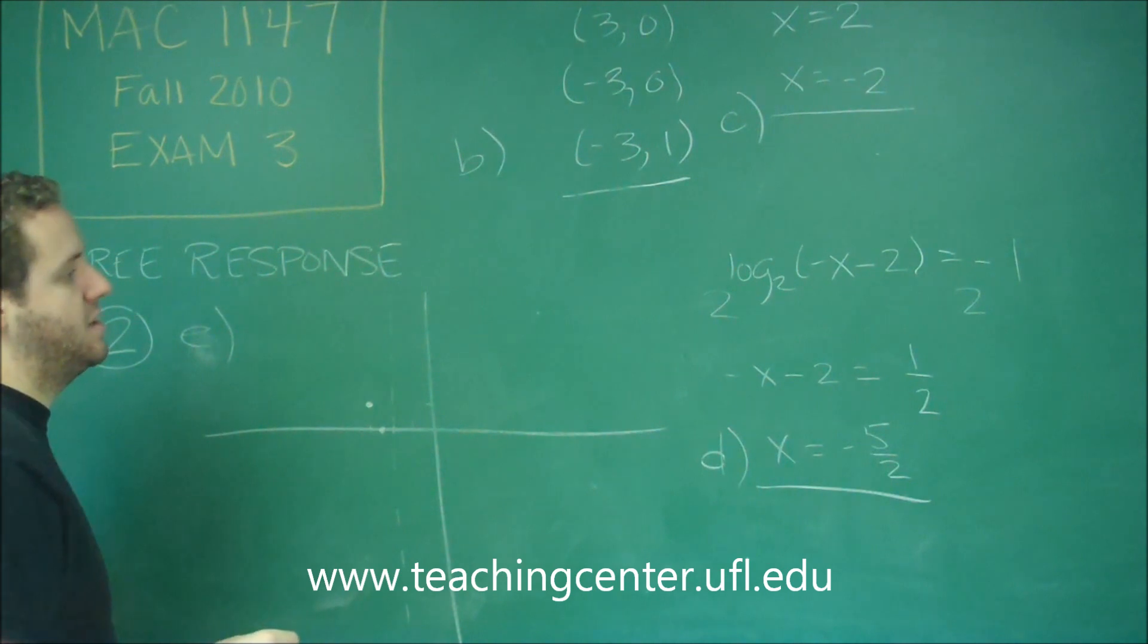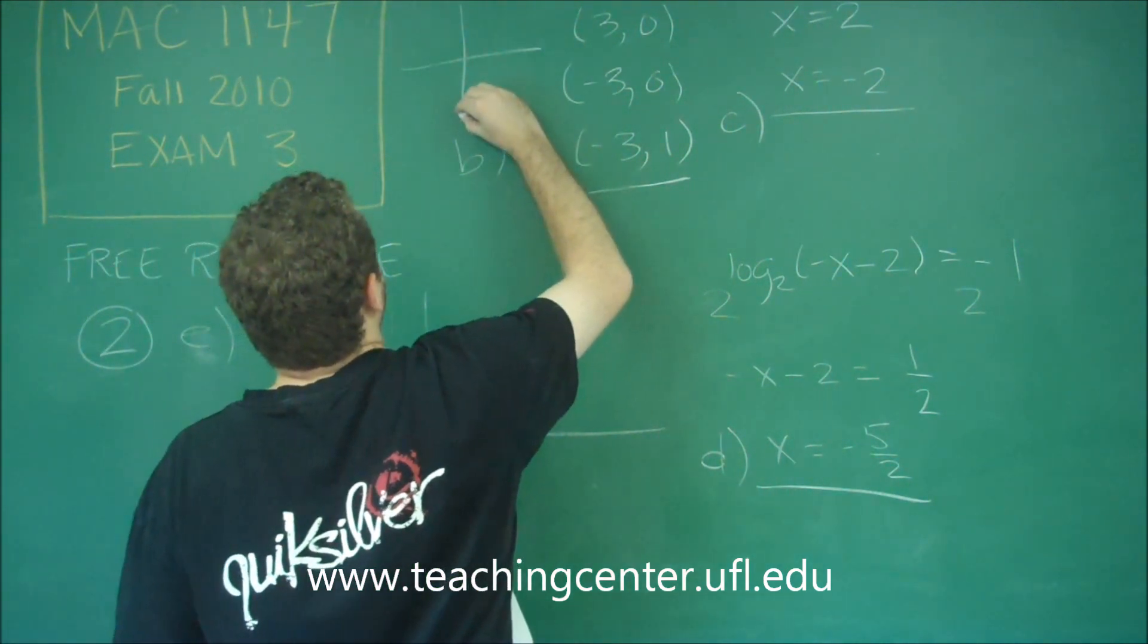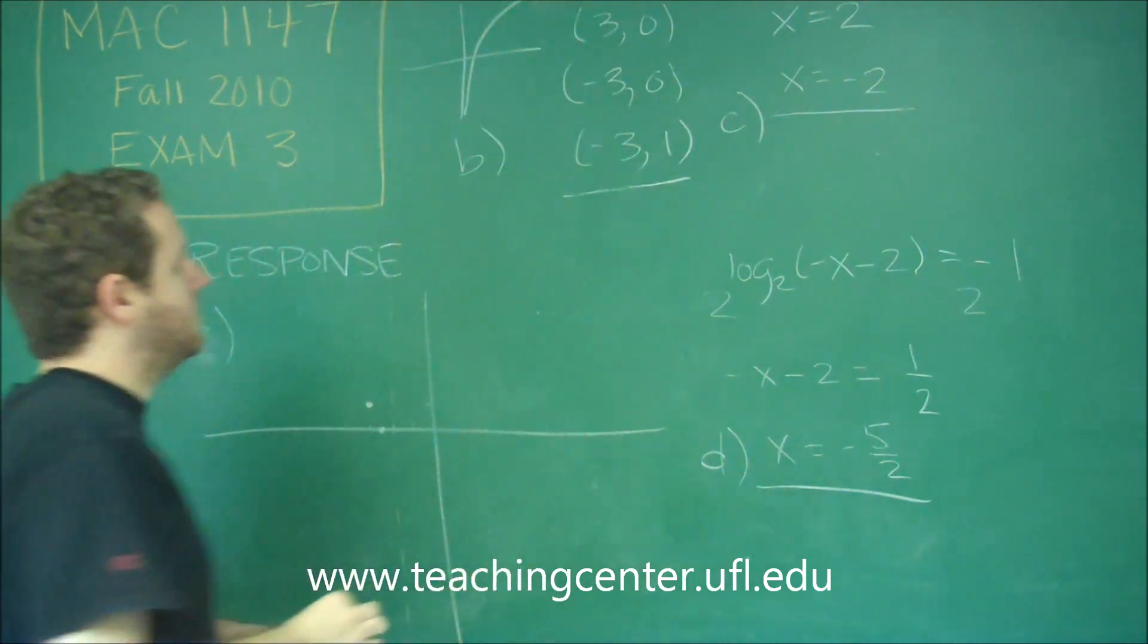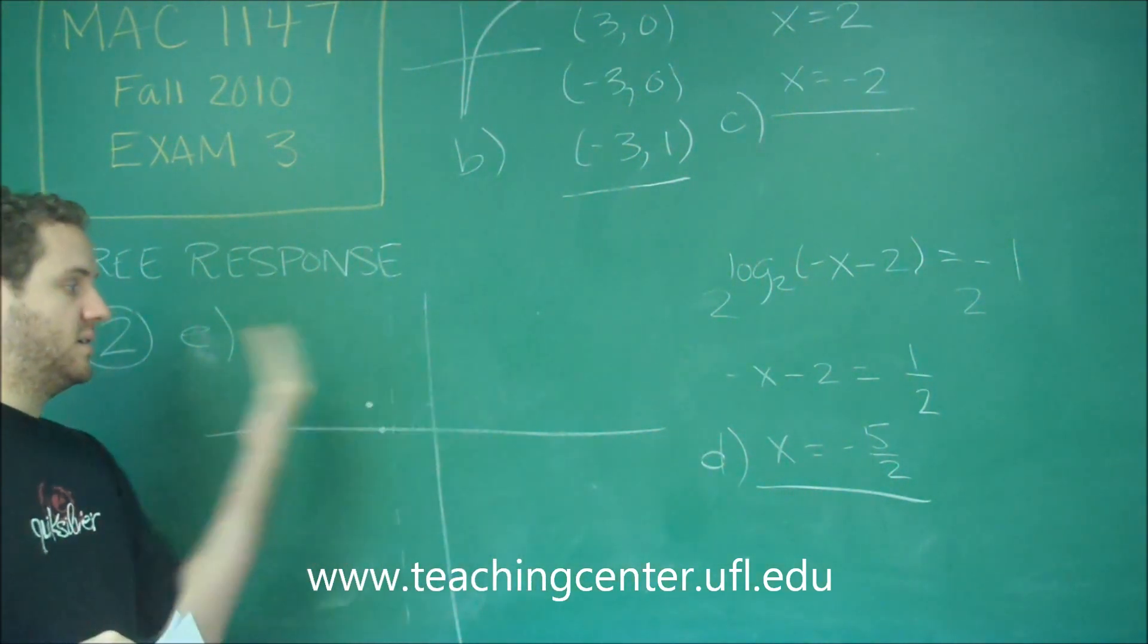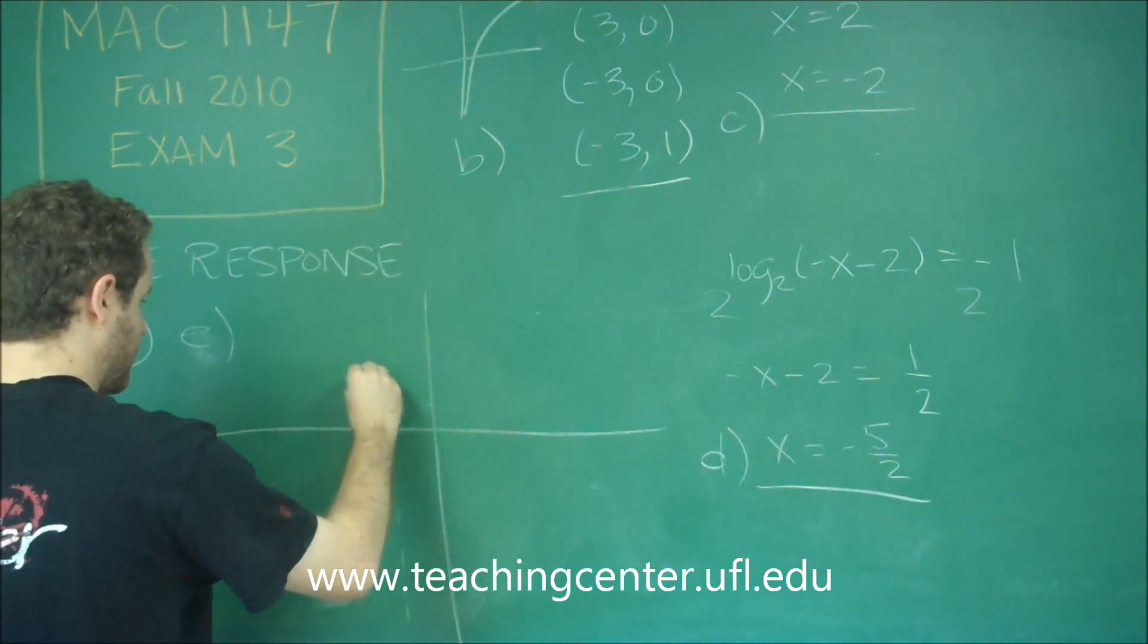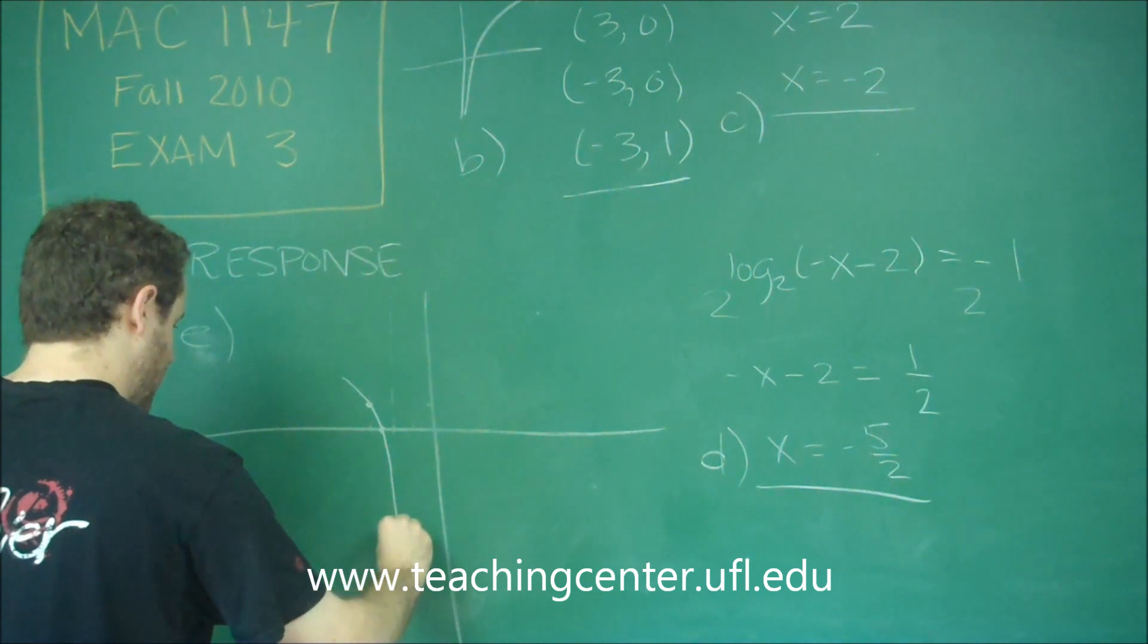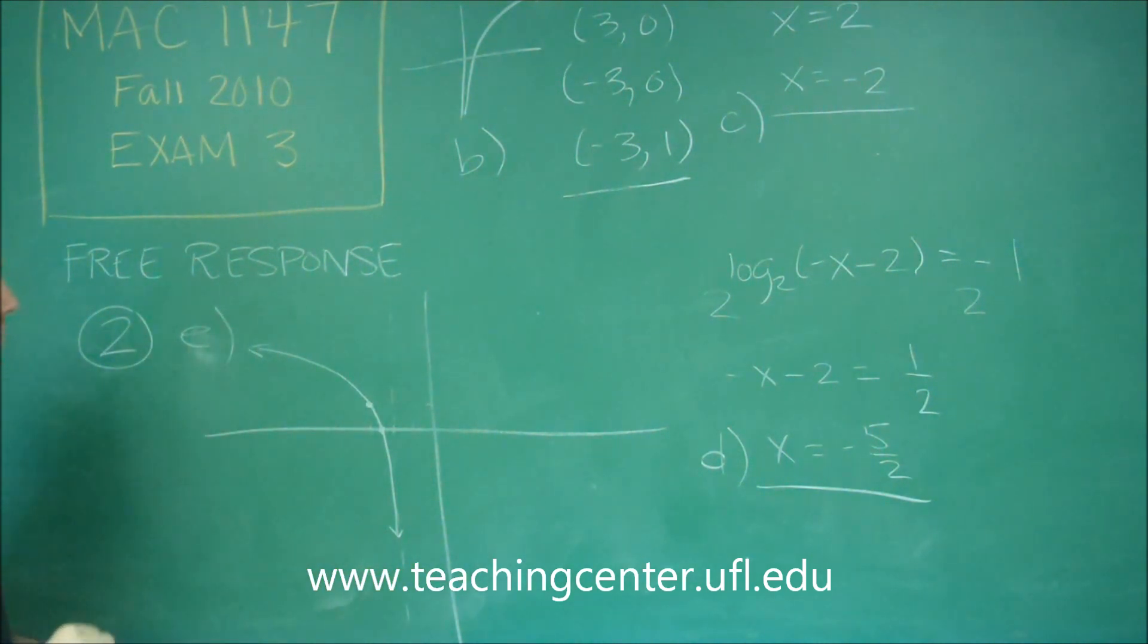And you know what the basic shape should look like because our regular log graph, remember, looks like that. Ours is going to be facing the other direction because it was reflected across the y axis and then shifted. So it's definitely going to have to go down towards the vertical asymptote and then up to the left.